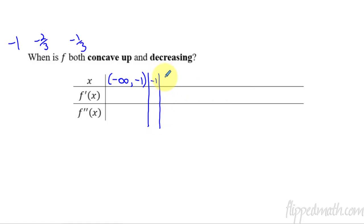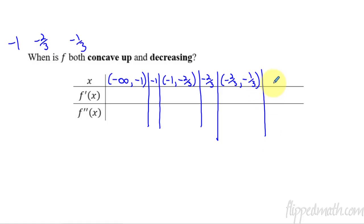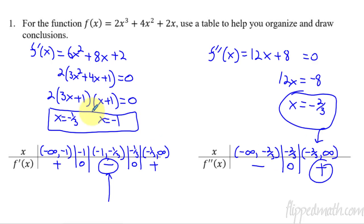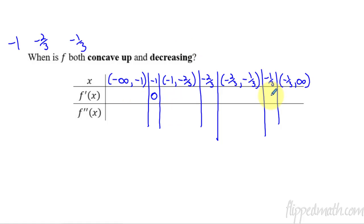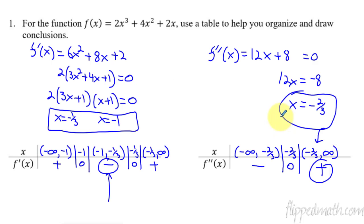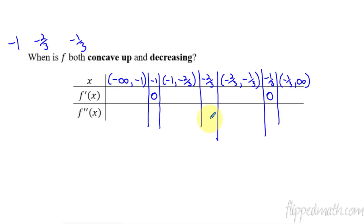I'm going to write a little bit smaller because I have a lot to do here. We go from negative one up to negative two thirds, then negative two thirds, then from negative two thirds up to negative one third — that's a really small interval — and then negative one third, and from negative one third off to infinity. From above, the first derivative is zero at negative one and negative one third, and the second derivative is zero at negative two thirds.